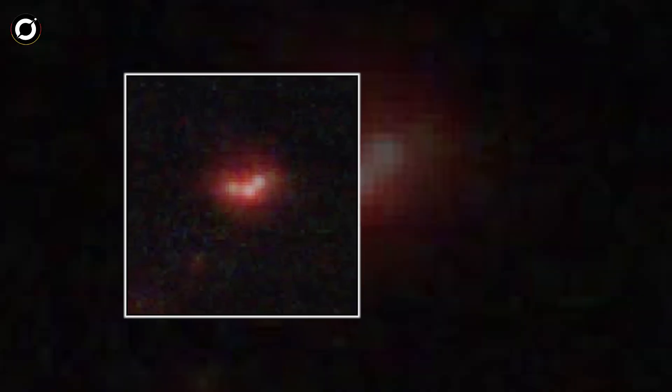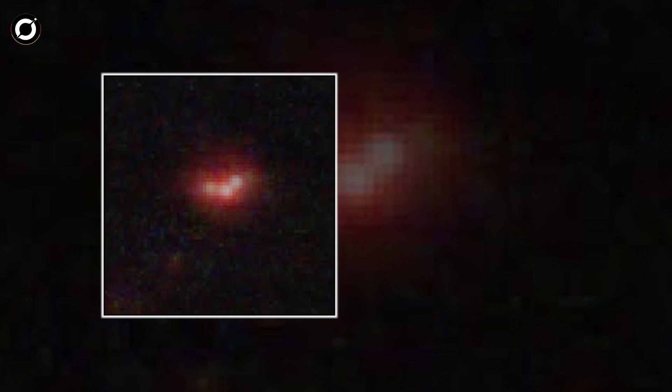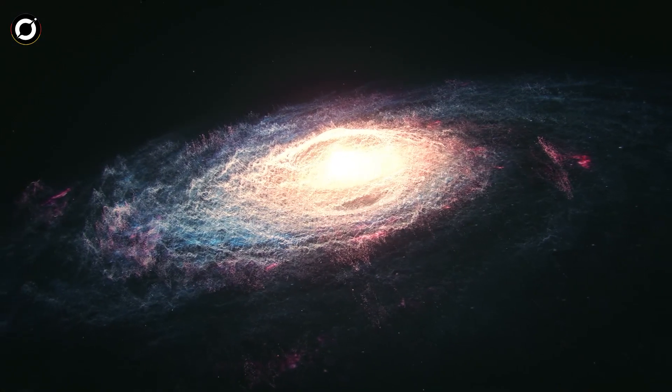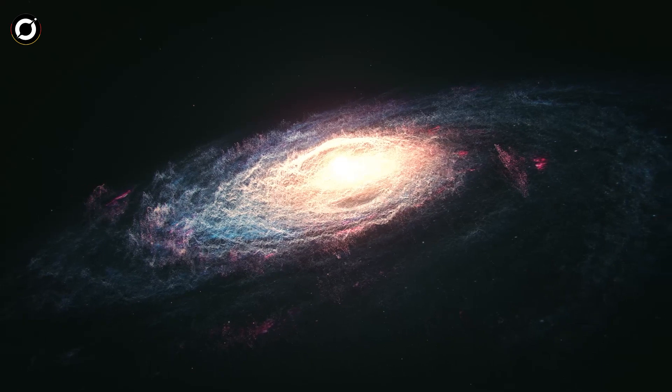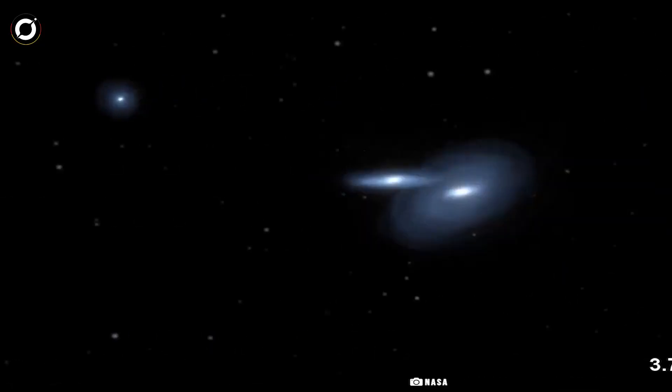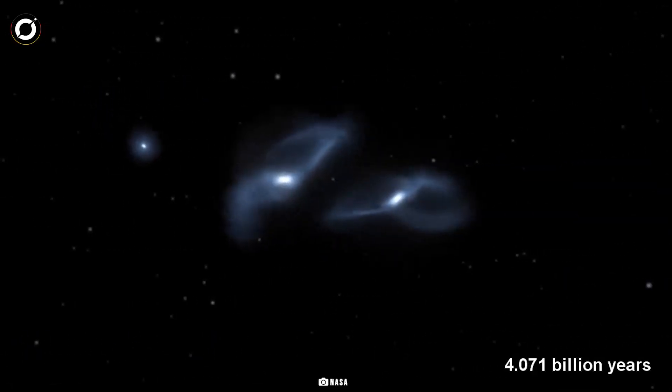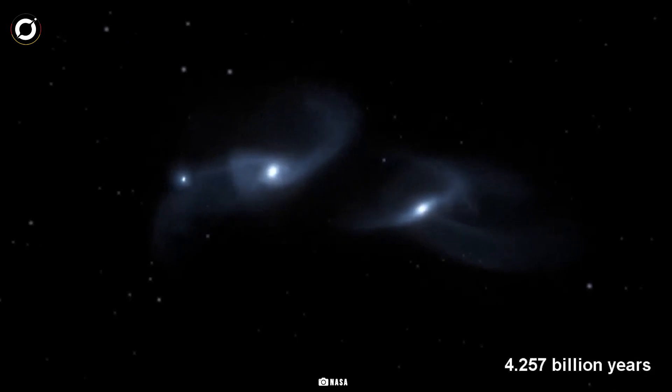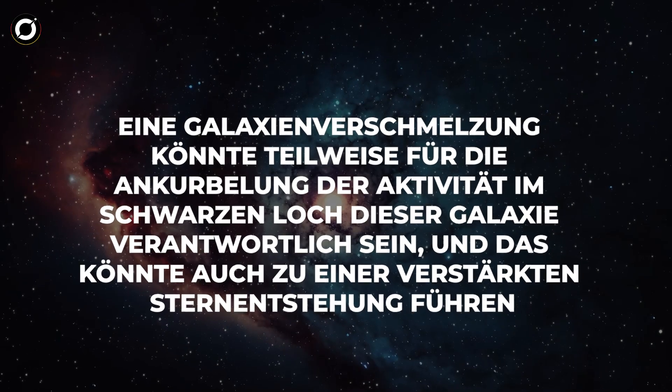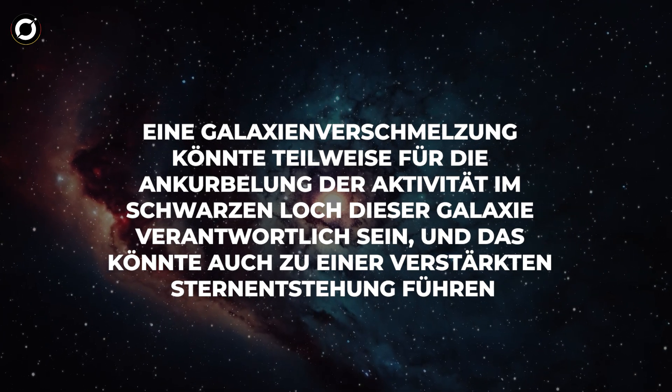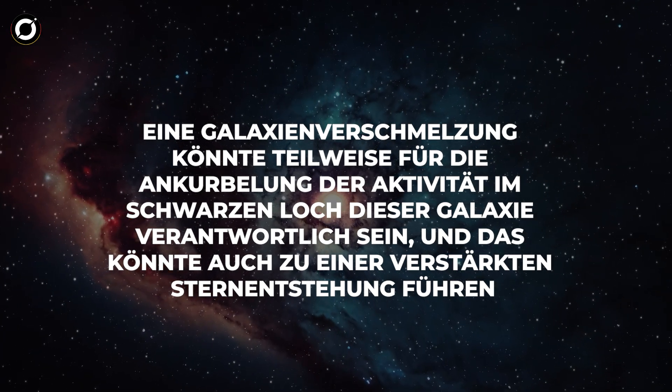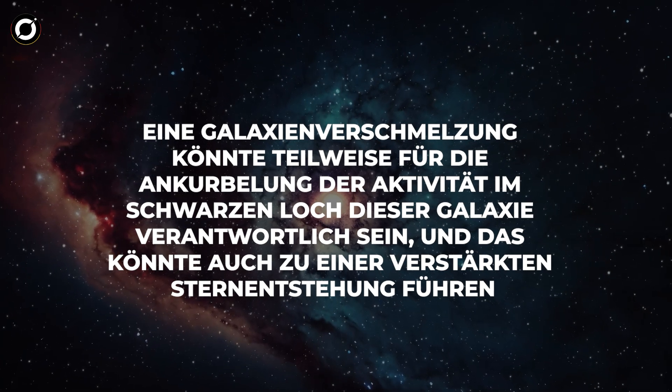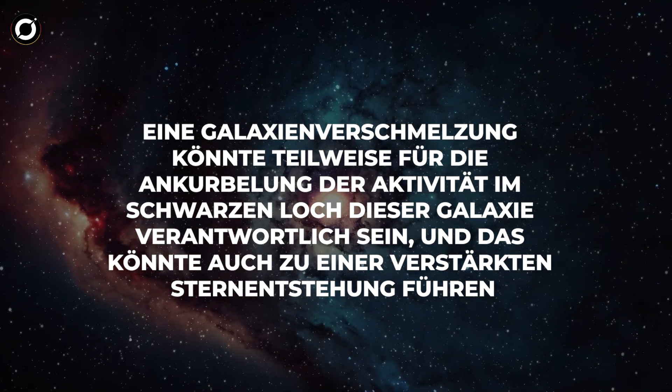CERS 1019 und sein Schwarzes Loch sind aus mehreren Gründen einzigartig. Möglicherweise handelt es sich nicht nur um eine Galaxie - die meisten Galaxien erscheinen als einzelne Scheibe, nicht CERS 1019. Wie das Bild zeigt, besteht es aus drei hellen Klumpen. Bei den Strukturen könnte es sich um verschmelzende Galaxien handeln, die die Entstehung von Sternen befeuern. Eine Galaxienverschmelzung könnte teilweise dafür verantwortlich sein, die Aktivität im schwarzen Loch dieser Galaxie anzukurbeln und das könnte auch zu einer verstärkten Sternentstehung führen.